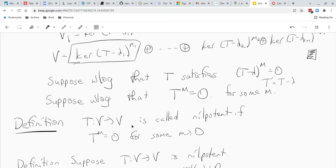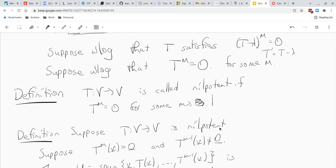So if t from v to v is a linear operator, we call it nilpotent if t to the m is 0 for some m, well okay, sorry, for some m bigger than or equal to 1. Okay, so that's what it means to be nilpotent.